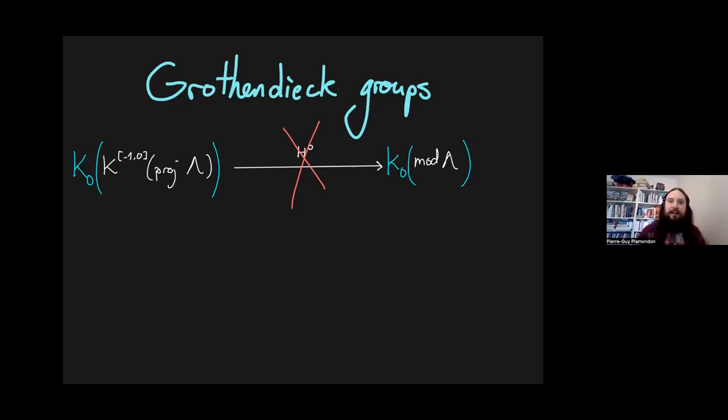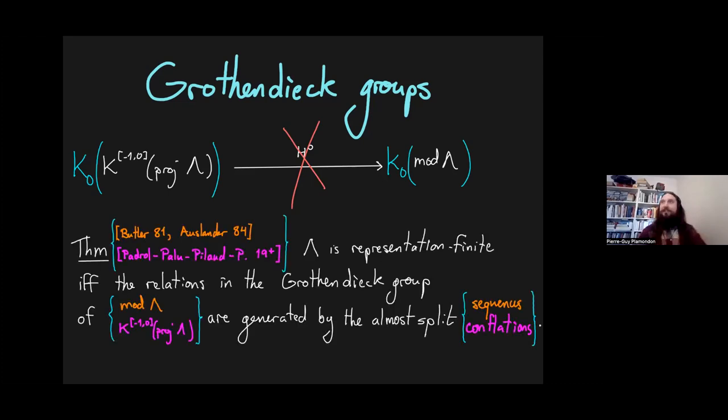Nevertheless, one can prove the following. So, this is a classical result from the 1980s for the module category, and this is something that we could prove for the category of projective presentations and more general extriangulated categories with Padrol, Palu, and Pilaud. Λ is representation finite if and only if the relations in the Grothendieck group are generated by the almost split sequences or conflations, depending on which category you're looking at.